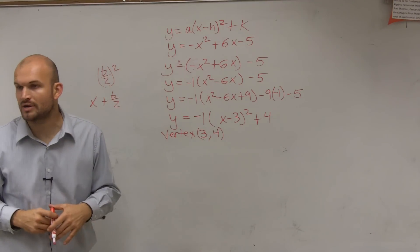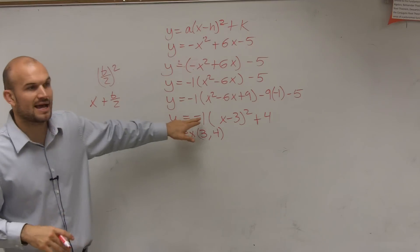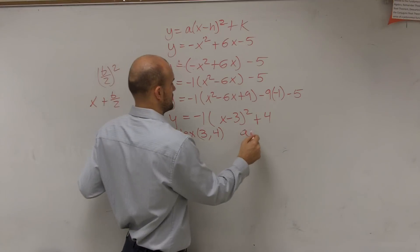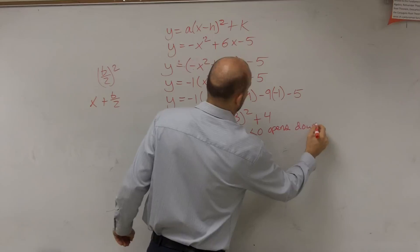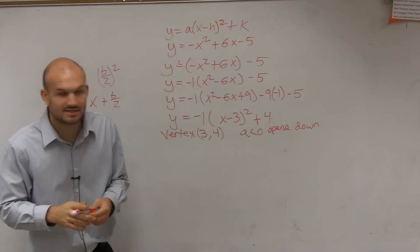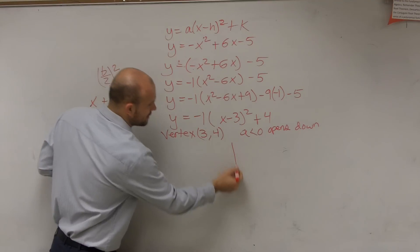And then let's determine, is it going to open up or down? Well, it's going to open down, right? Since my a is less than 0. Again, what I like to do is I like to graph the parent graph when graphing transformations. So I'm going to graph the parent graph.